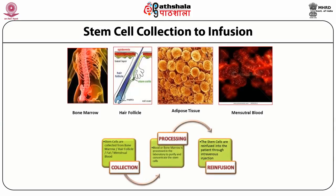The mode of stem cell transplant goes from collection to infusion. Stem cells are collected from bone marrow, hair follicles, or any tissue source. These collected stem cells are then processed — purified and concentrated — so the number of cells to be infused is optimized. The purified stem cells can then be re-infused into the patient through intravenous injections. Sources include bone marrow, hematopoietic stem cells, mesenchymal stem cells, adipose tissue, hair follicles, or other relevant sources.